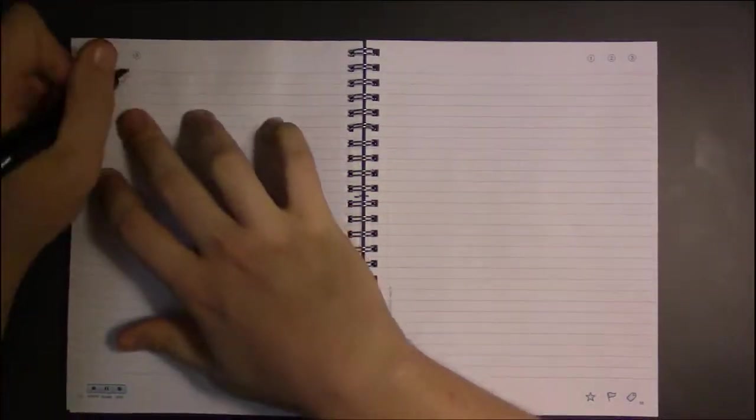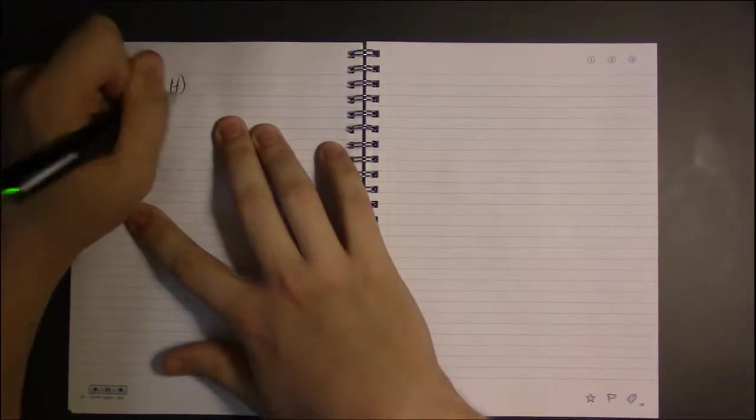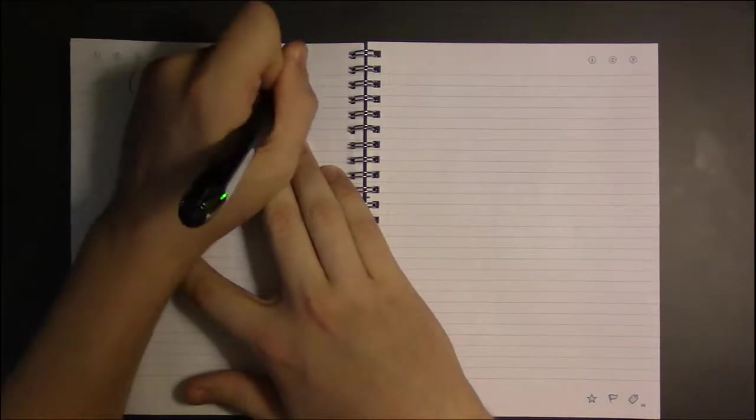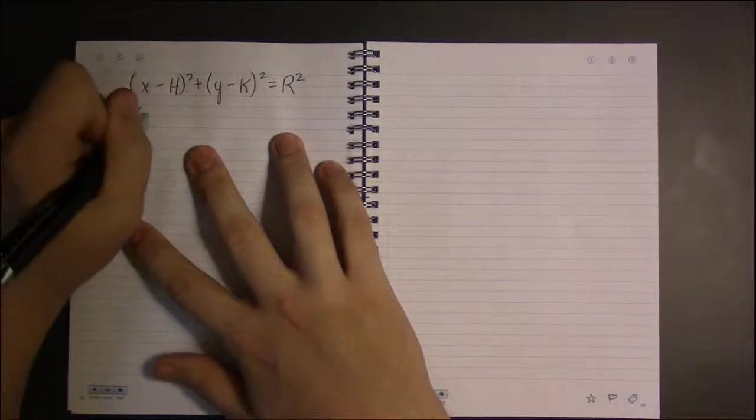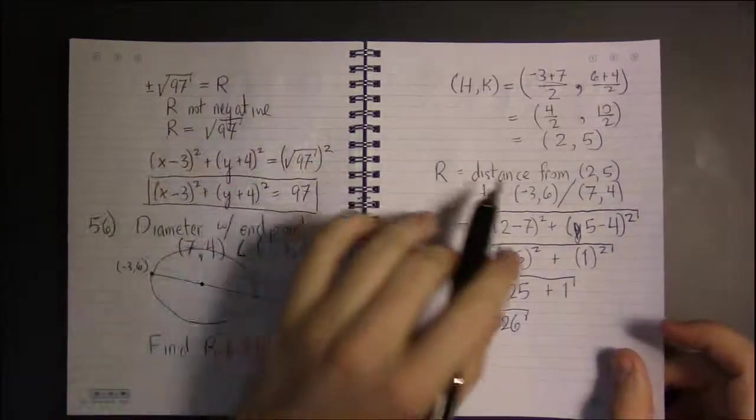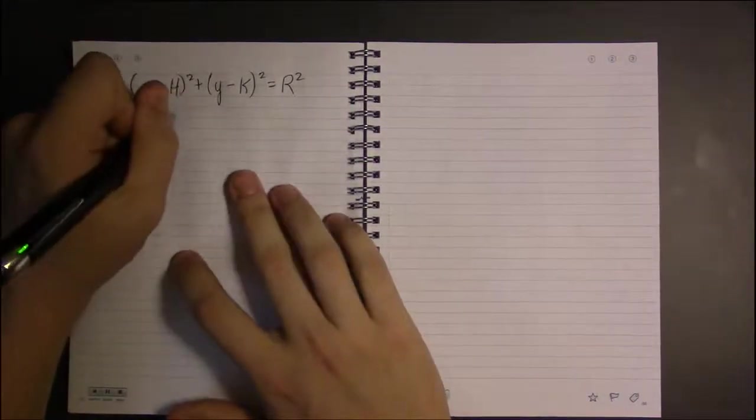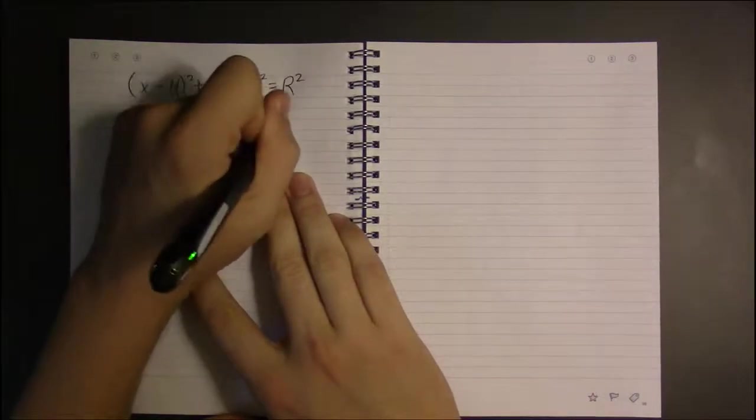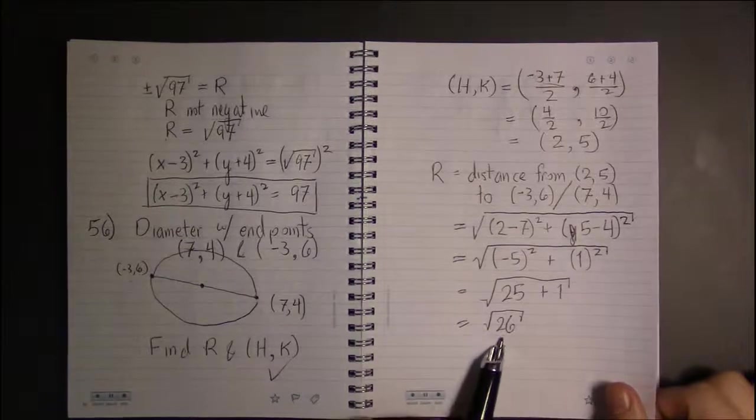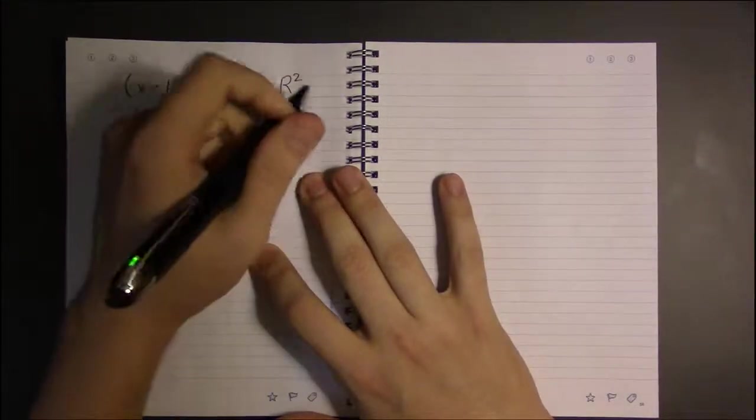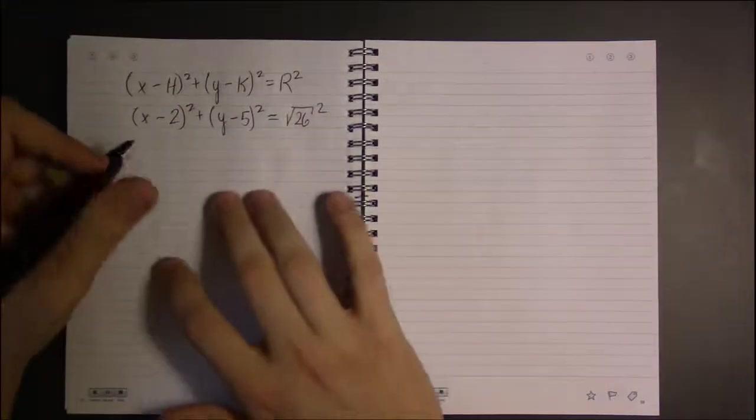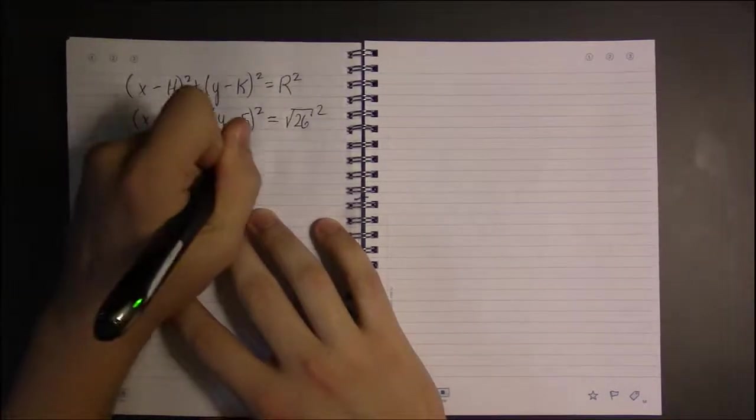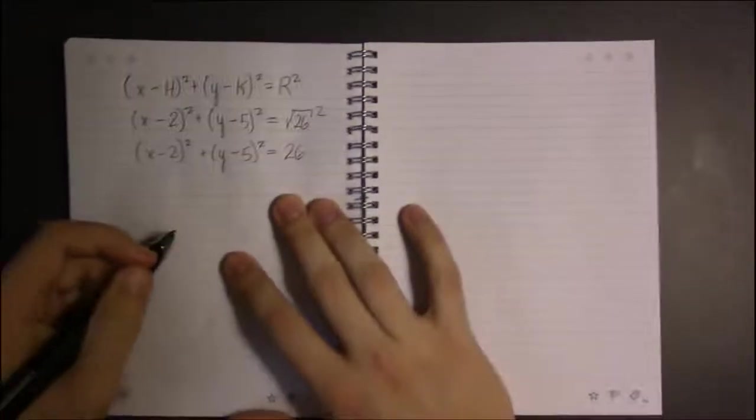Using our formula for the standard form of a circle, we know H and K. That's the center, and the center was 2, 5. So this will be x minus 2 squared plus y minus 5 squared. And R, we found R to be the square root of 26, so this will be the square root of 26 squared. And squaring the square root is nice because it just gives us what's inside. And that's it.